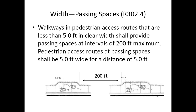Where the walkway is less than five feet in clear width, five-foot by five-foot passing spaces must be provided at intervals of 200 feet maximum. This is one reason many agencies have adopted the five-foot minimum — so they don't have to worry about providing passing spaces.